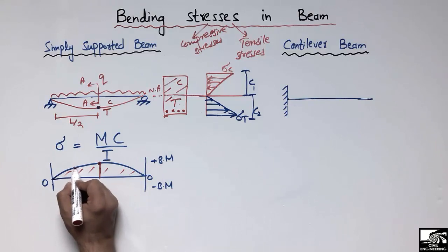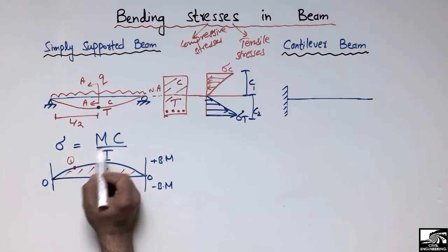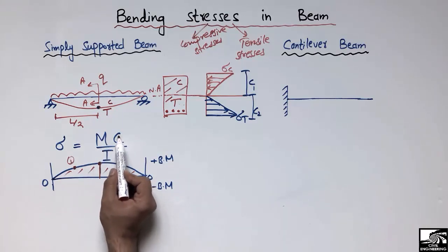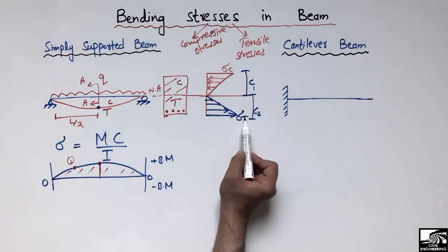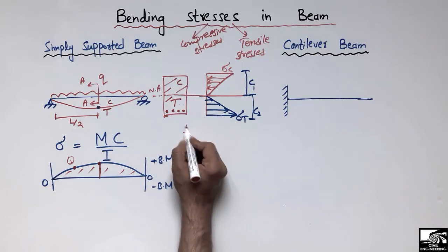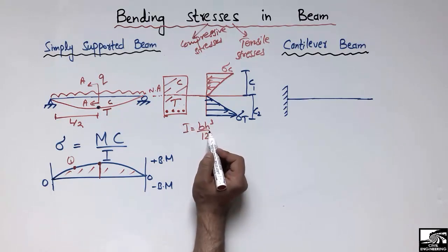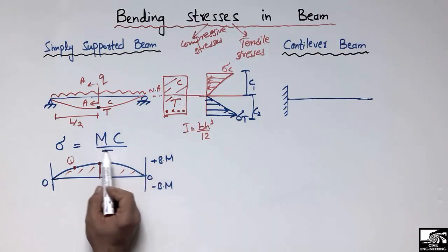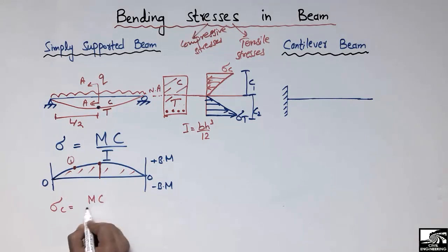If you want to find the stresses at any particular point, determine the bending moment at that point, plug in the value of C — the distance from the neutral axis to the top or bottom of the beam — and the moment of inertia I. For a rectangular beam, the moment of inertia is I = BH³/12. Putting all these values into the formula gives the bending stresses at that point.